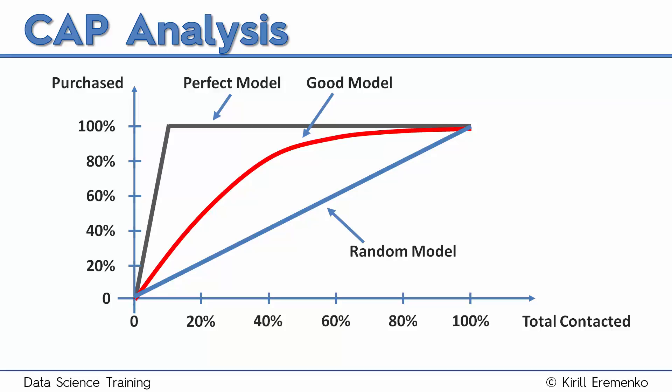So these are the three main lines. And how do we analyze this CAP curve? We already know how to build it, but what insights can we derive from here? Well, it's kind of intuitive that the closer your red line is to the gray line the better your model. The closer it is to the blue line the worse.